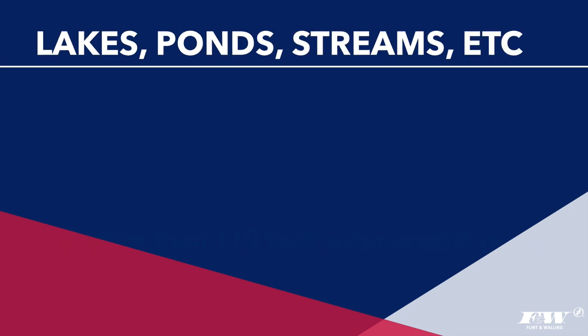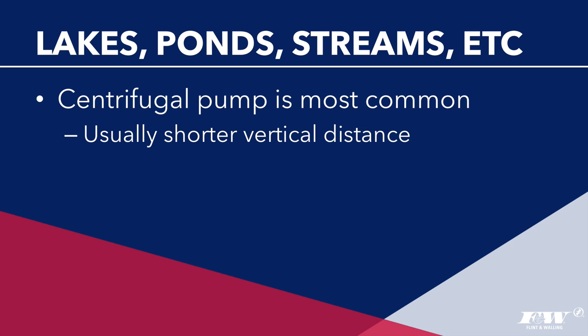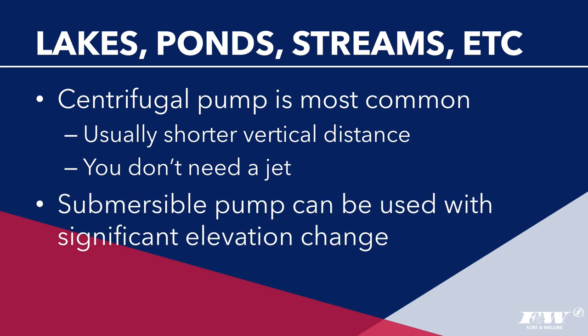When pumping water from a fresh water source like a lake, pond, or stream, the most common choice is a centrifugal pump. Because there is usually a shorter vertical distance between the water level and the pump, the force exerted by air pressure on the water is enough to push water up to the pump. For situations with significant elevation change between the water level and the pump, or where there is no suitable place for a centrifugal pump, a submersible pump is sometimes the better choice.